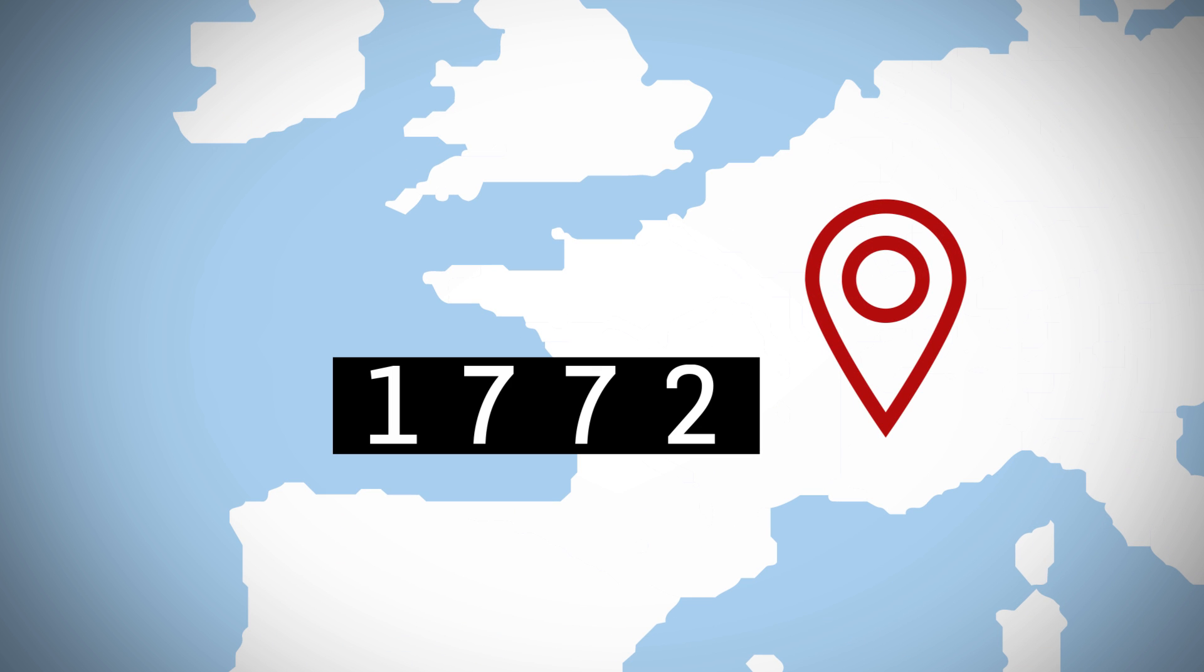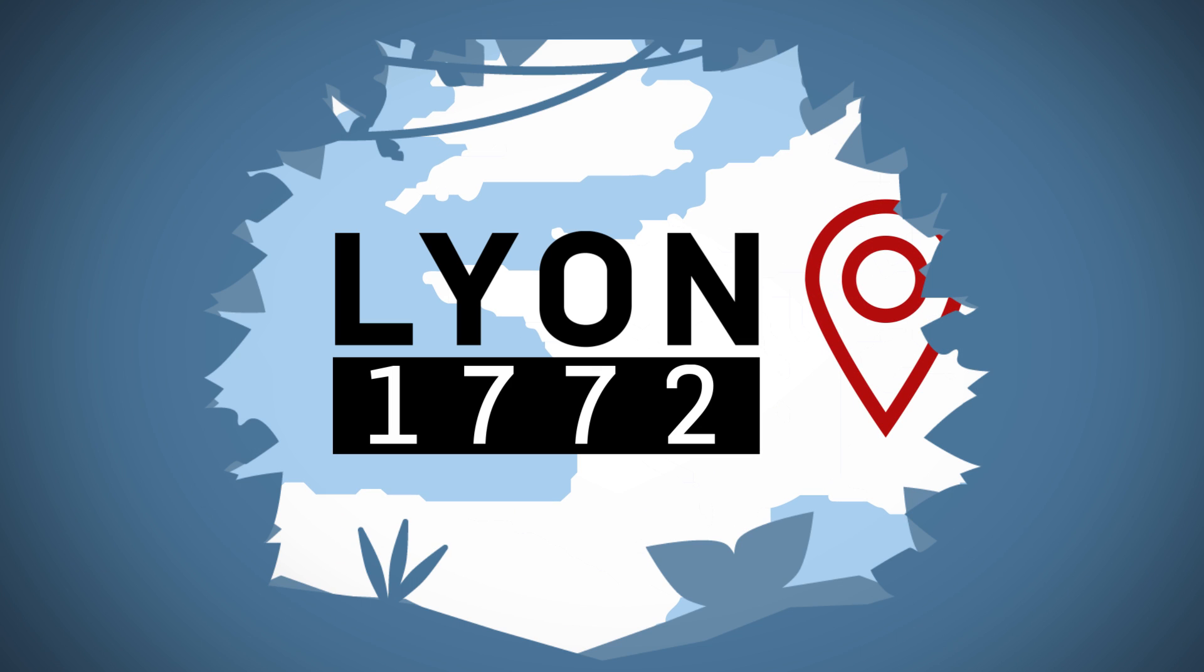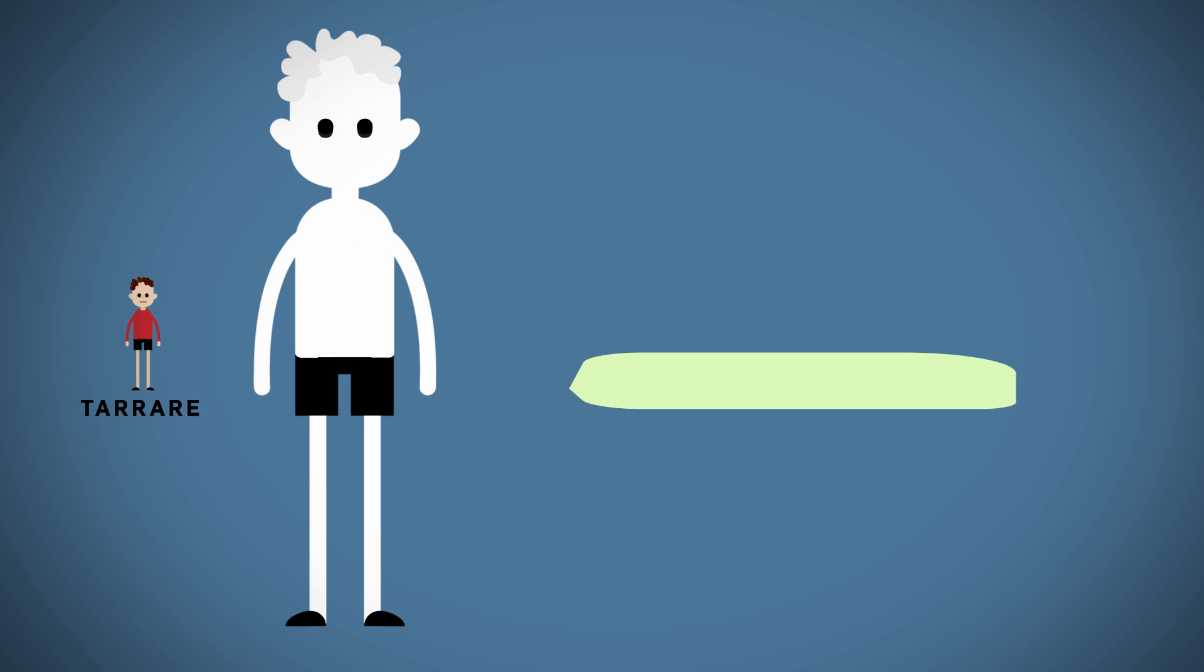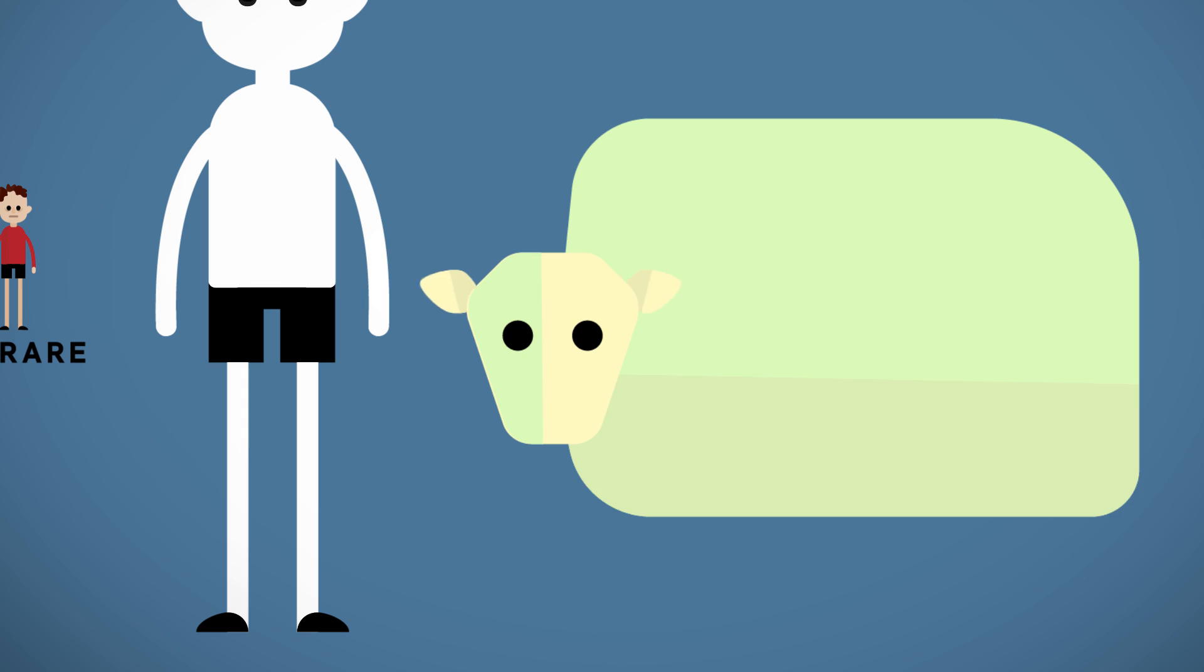Tarare was born in 1772 in rural France near Lyon. He was a boy with an enormous appetite, and by the age of 17, he was capable of devouring his entire body weight in bullock over the course of a day.